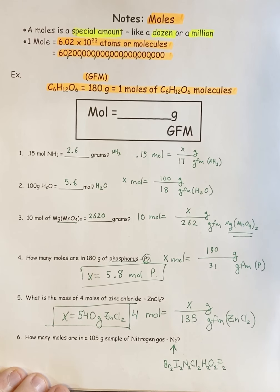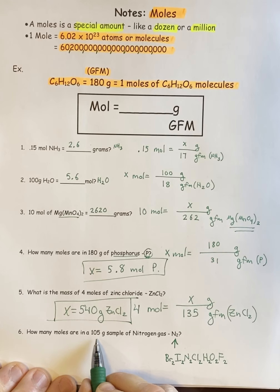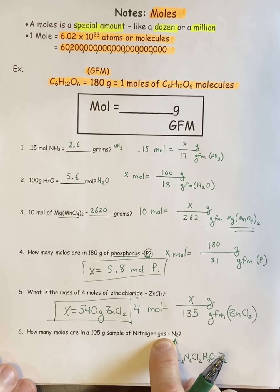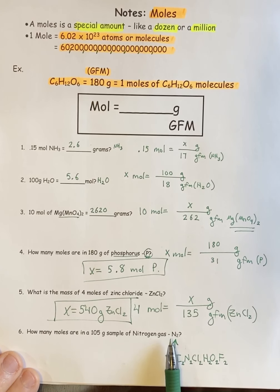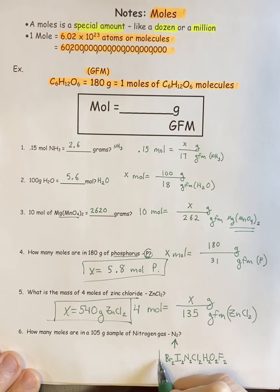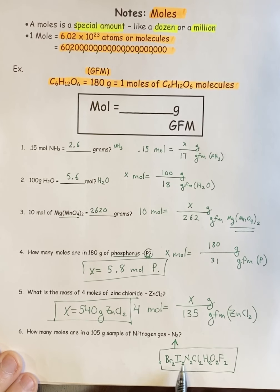Last question. You have a 105 gram sample of nitrogen gas. This is another tricky one. Nitrogen gas is just pure nitrogen, which normally you would think would be just N. But since nitrogen is part of these special elements we mentioned, it's a fake word we made up called Brinklehoff. There are seven elements on the periodic table that do not exist as monoatomic elements, they exist as diatomic elements.